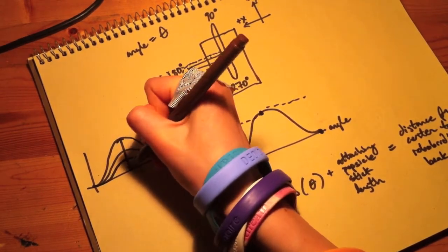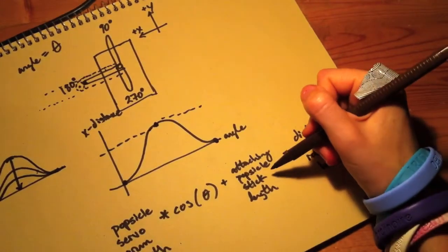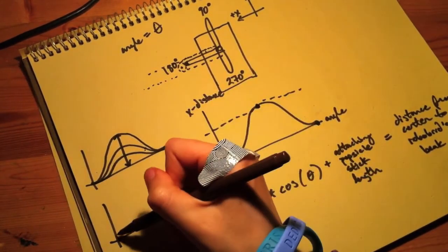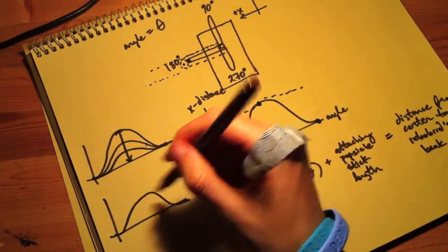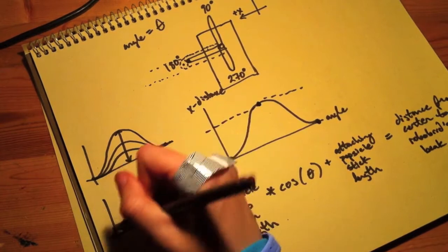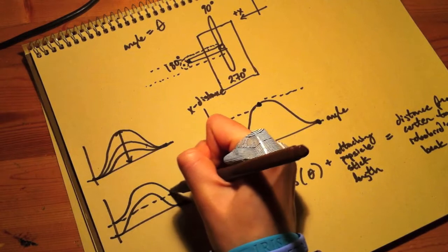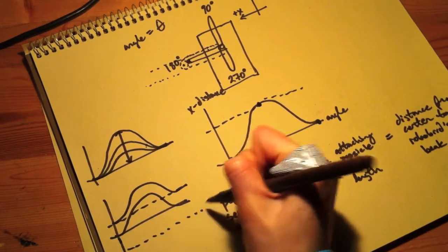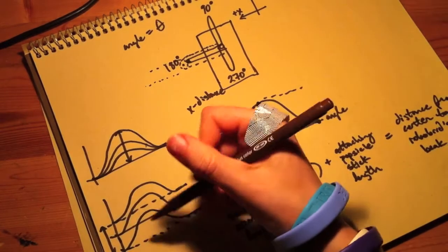When we're adding the attaching popsicle stick length, then that's just changing the base value of the function. So imagine that this is a normal sine wave. Then if we add something that's greater than 0, then it will start down like this. So it's really only changing the base values of the function.